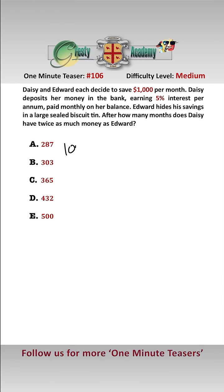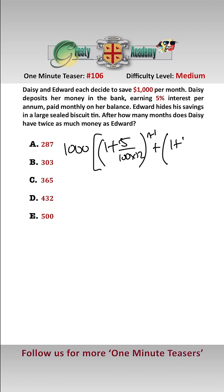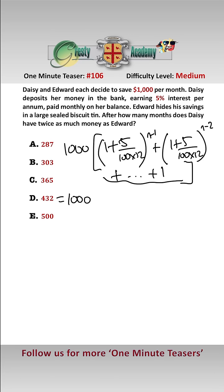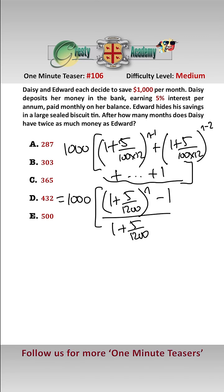After n months of saving, Daisy has 1,000 times (1 + 5/100 × 1/12) to the n minus 1, plus (1 + 5/100 × 1/12) to the n minus 2, plus 1, and so on. This is a geometric progression, which simplifies to 1,000 times [(1 + 5/1200) to the n minus 1] over [(1 + 5/1200) minus 1].